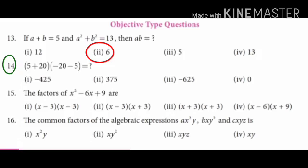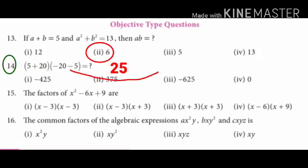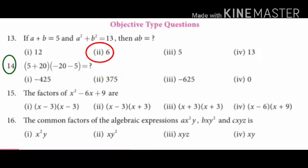14th sum: 5 plus 20 into minus 20 minus 5 equals? First, 5 plus 20 equals 25. Then minus 20 minus 5 equals minus 25. Since both have the same symbol, 25 into 25 equals 625. Plus into minus gives minus. So the answer is option 3: minus 625.